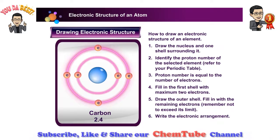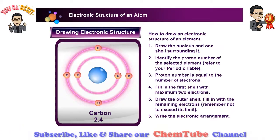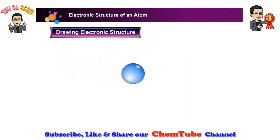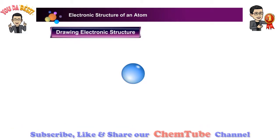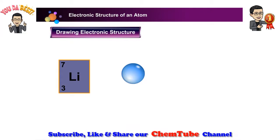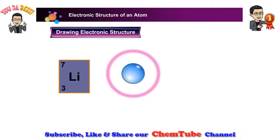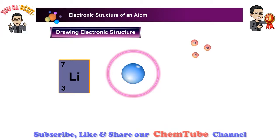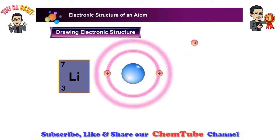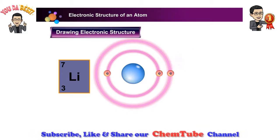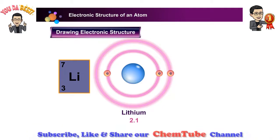Arrange the four electrons in the second shell. The second shell can take up to eight electrons, so we don't have to draw the third shell. Lastly, write the electronic arrangement: the number of electrons in the first shell, dot, followed by the number of electrons in the second shell. Now we have a complete electronic structure of an atom. For lithium, the proton number is three, meaning lithium has three electrons. The first shell holds two electrons, and the remaining one goes to shell number two. The electronic arrangement of lithium is two dot one.